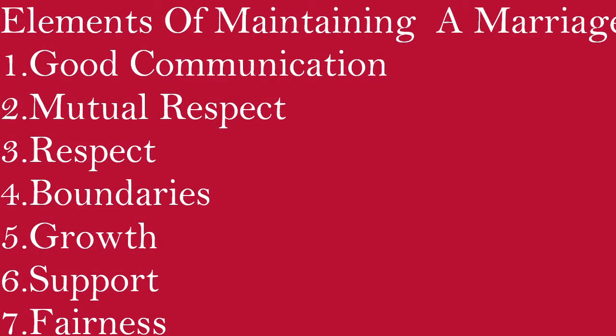I want to talk about the seven elements of maintaining a marriage. I'll list them and you can research why they're important: 1) good communication, 2) mutual respect, 3) respect, 4) boundaries, 5) growth, 6) support, and 7) fairness.